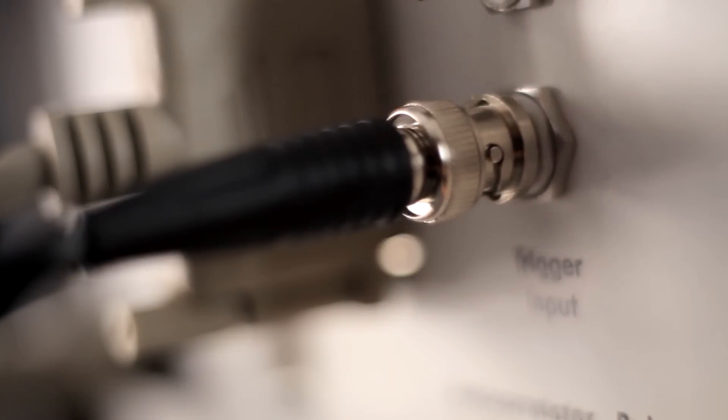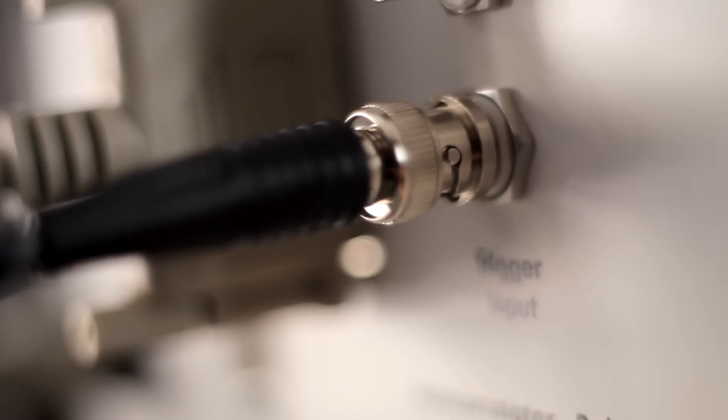First, connect a BNC cable to the trigger input jack on the back of pulse check. Connect the other end of the cable to the output from your laser system.